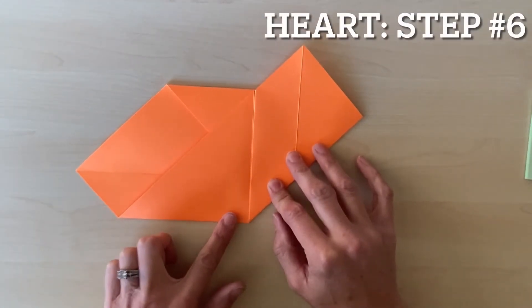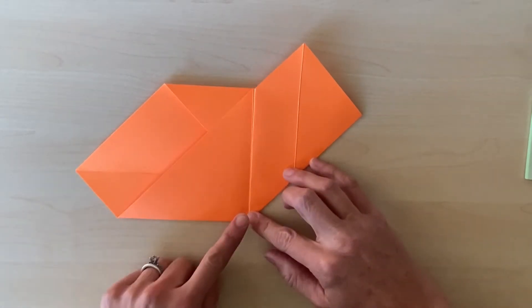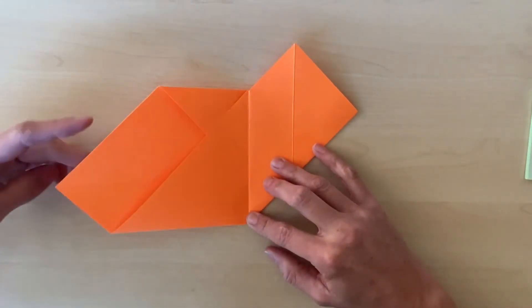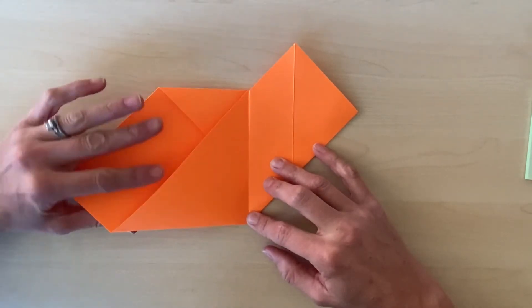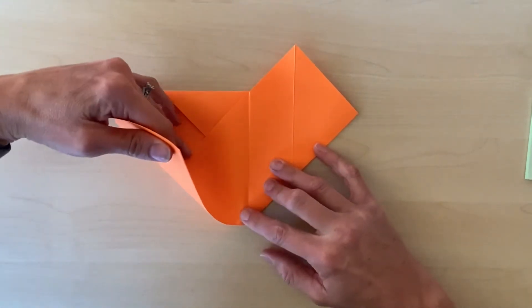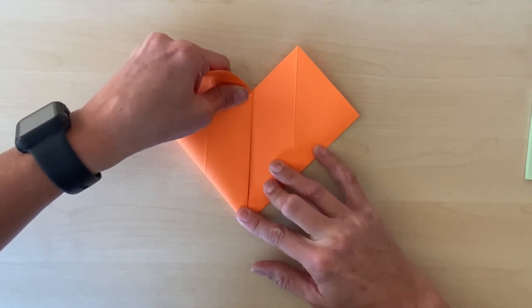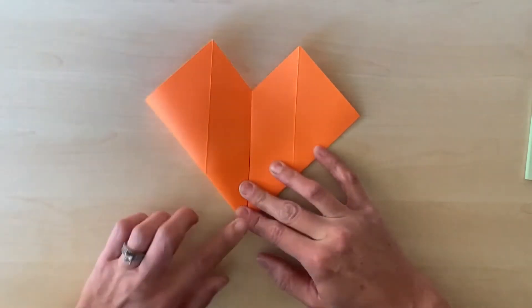I'm going to do the same thing on the other side. Starting with my pointer finger here, I'm going to put my thumb under the paper and diagonally fold, using my pointer finger to hold down that spot and press the crease.